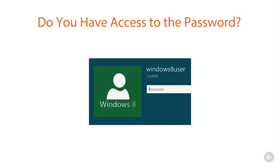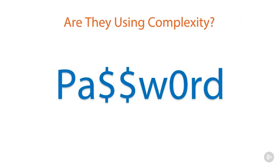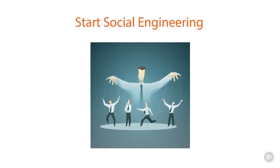The next question you have to ask yourself, if you don't have that, is: are they using complexity? Because this is going to help me determine what the password is. This is something we should have been able to answer during our enumeration stage, or possibly even through social engineering — that would be another way of trying to get a hold of passwords.